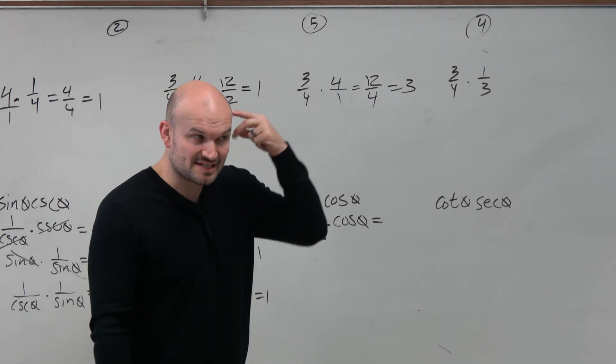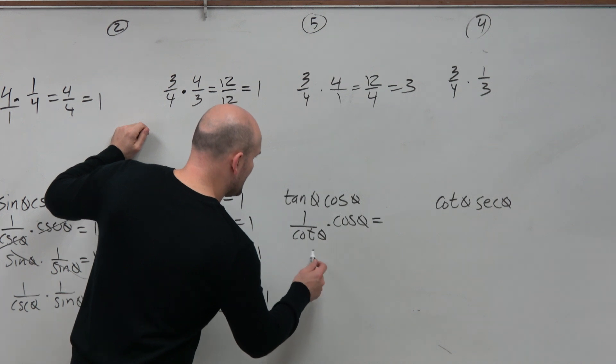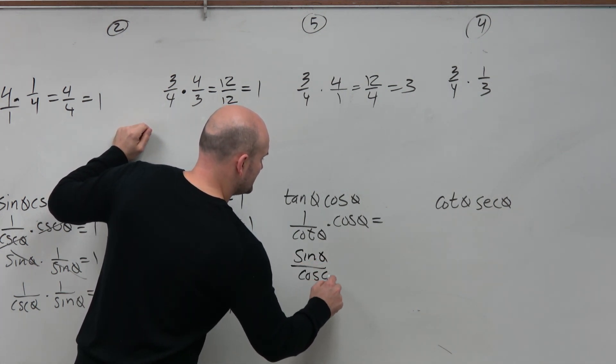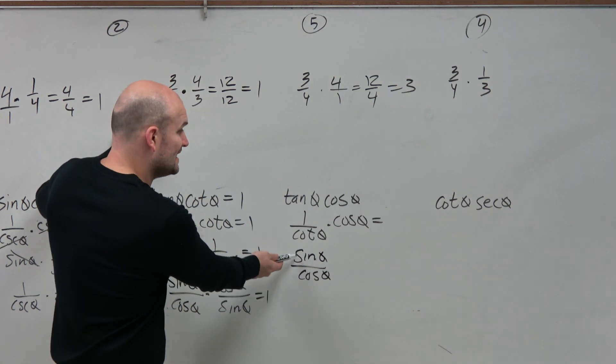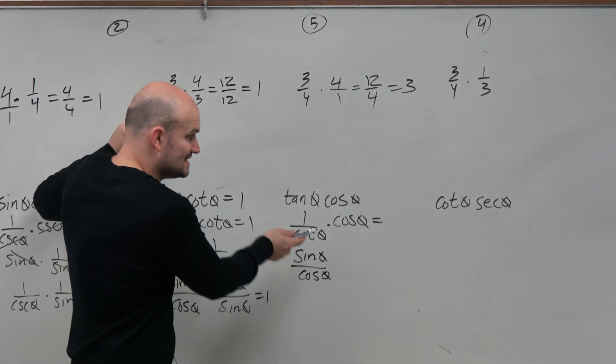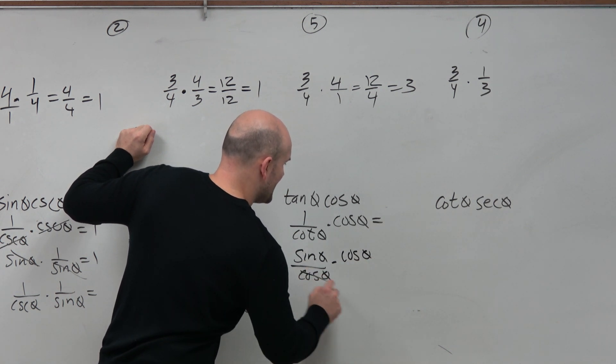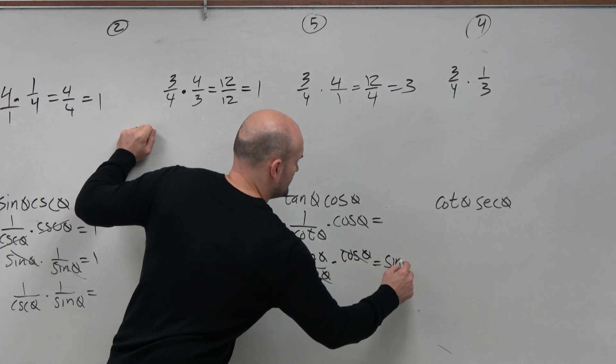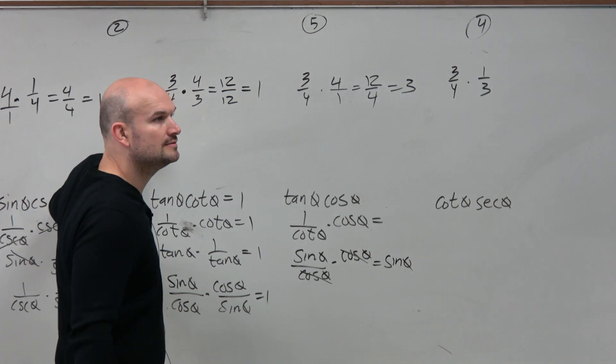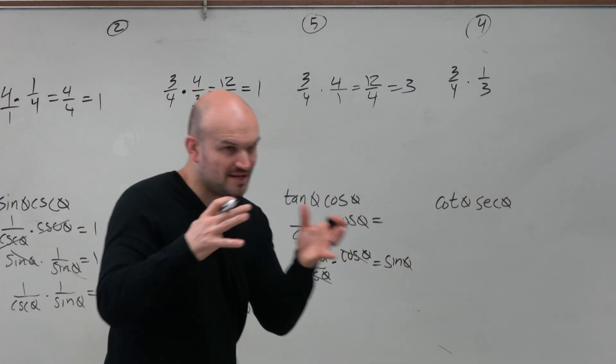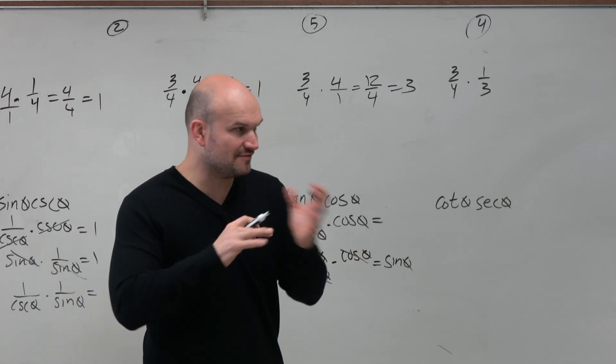But if I start thinking about this, if I rewrite tangent as sine of theta over cosine of theta, so if I use the quotient identity rather than the reciprocal identity, I can see that cosine is actually going to divide out to give me sine of theta. So you've got to be able to adapt. Not everything is straightforward.